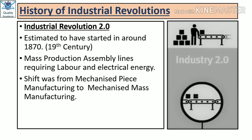Let us know what is Industrial Revolution 2.0. It was estimated to have started around 1870, that is the 19th century. Here, mass production assembly lines were used, which required labor and electrical energy. The use of electrical energy was initiated in Industrial Revolution 2.0 and that was the game changer. The shift was from mechanized piece manufacturing to mechanized mass manufacturing. Mass production lines, as seen in the automotive industry, were part of Industrial Revolution 2.0, initiated in the 19th century.